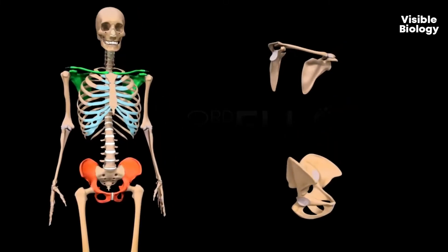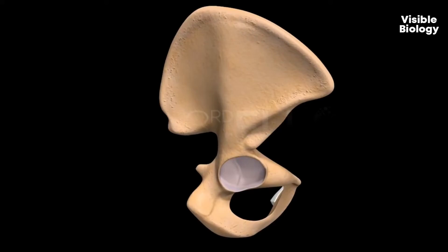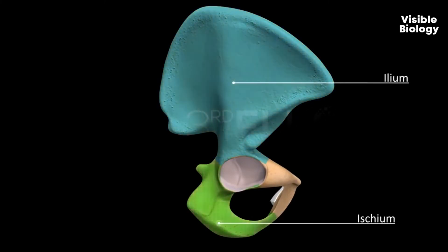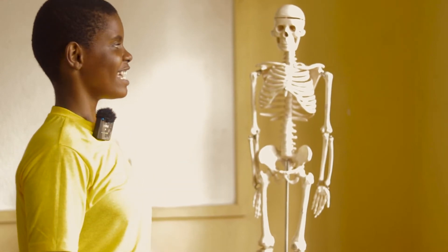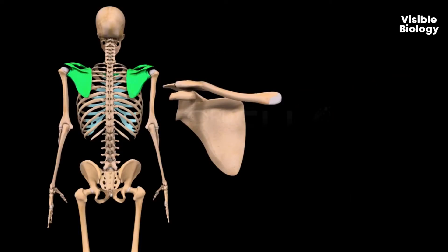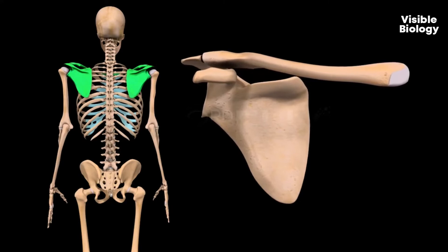The girdles are divided into two parts: the pelvic girdle and the pectoral girdle. The pelvic girdle are irregular-shaped bones of three kinds, which are the ileum, the ischium, and the pubis. The pectoral girdle makes up your shoulder, consisting of two bones: the clavicle and the scapula.